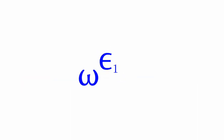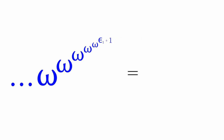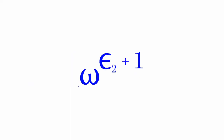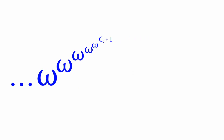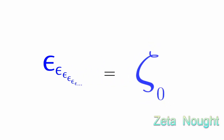We can do epsilon_1 plus 1, and even have an infinite tower of omegas with epsilon_1 plus 1 at the top — this sequence is called epsilon_2. If we have omega to the omega to the omega with epsilon_2 plus 1 at the top, this is called epsilon_3. We can keep increasing the index of epsilon, and yes, we're allowed to use omega as our index. We can even have epsilon_naught as our index, and keep nesting epsilon_naught an infinite number of times. Then we'll reach our next infinite ordinal, which is zeta_naught.